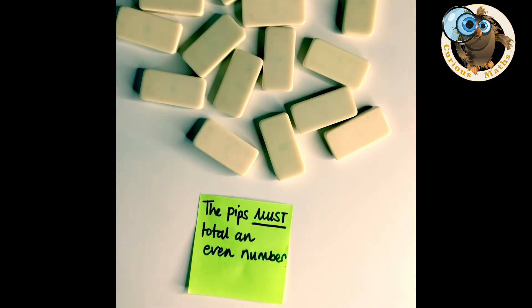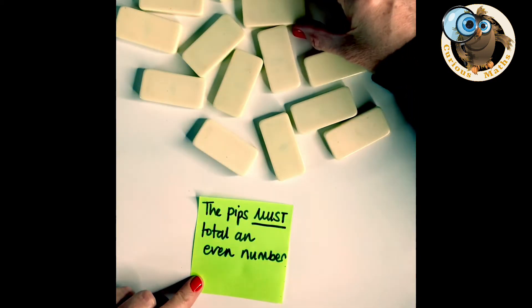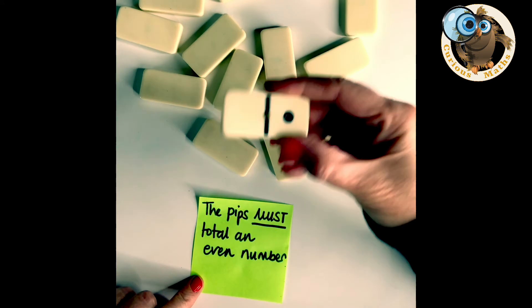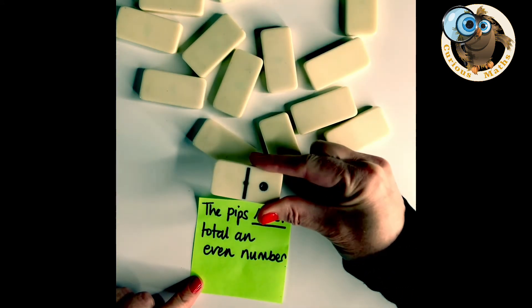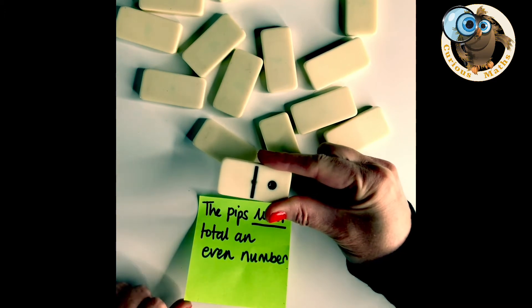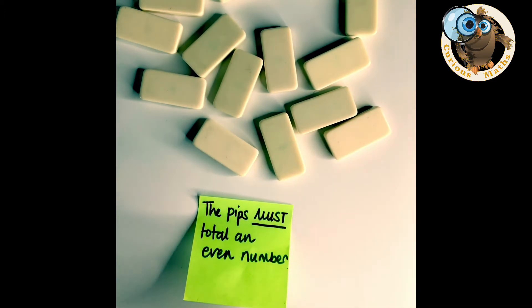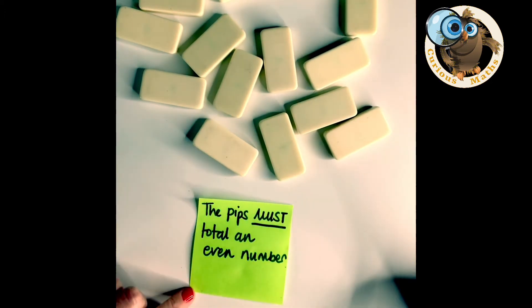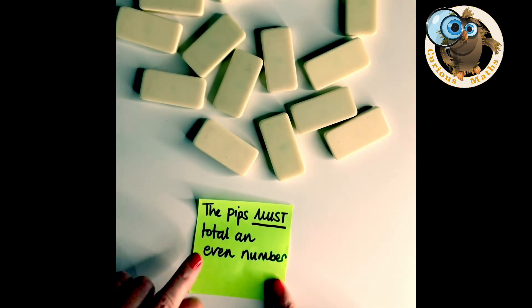So everybody understands that the pips must total an even number and you can have a conversation about what that must mean. Now if I'm going to turn over my first domino, oh dear, the rule is the pips must total an even number and I've only got one pip. So I do not keep that tile. And then it goes on to the next person. It goes all the way around for this rule.